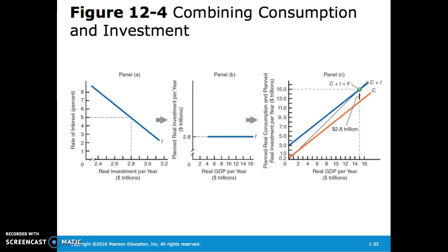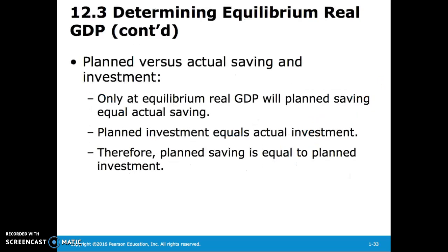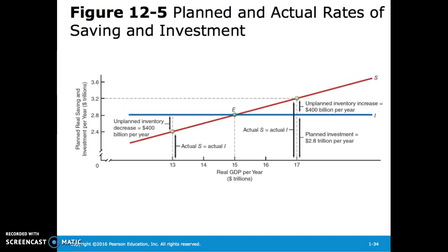Looking at the chart and our investment schedule, we see that we plan to invest $2.8 trillion. Adding that to our consumption, we get our consumption plus investment curve. However, only at equilibrium real GDP will planned saving equal actual saving and planned investment equal actual investment — therefore, planned saving equals planned investment. Since planned investment is constant and savings changes with real GDP, we can end up with gaps on either side of equilibrium.